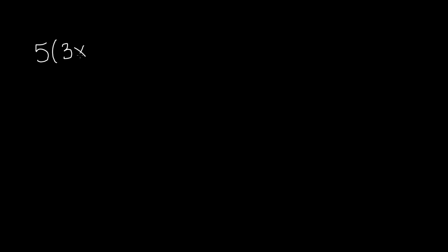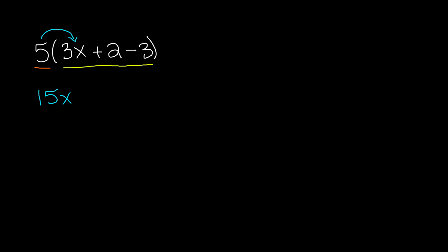Now let's do another example. This time we have 5 times 3x plus 2 minus 3. We have a single term outside the parentheses which is 5, and three terms inside: 3x, positive 2, and negative 3. Using distributive property, we distribute 5 to 3x — 5 times 3x gives us 15x. Then 5 to positive 2 gives us positive 10. Then 5 to negative 3 gives us negative 15.